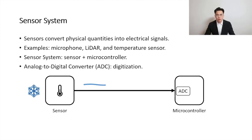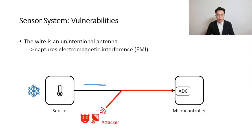Sensors are highly integrated into our lives, and hence it is essential to be concerned with the security and correctness of sensor measurements. Without any authentication scheme, the microcontroller has no choice but to trust the sensor measurement. The wire that connects the sensor to the microcontroller is an unintentional antenna, which is sensitive to electromagnetic interference, or EMI. An attacker can use EMI to remotely inject an attacking signal into the sensor system and change the sensor output. If the microcontroller includes incorrect measurements in its control decisions, it could have disastrous consequences.